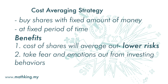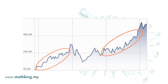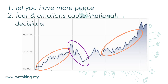If you invest one lump sum at a point, you will be so excited when the share prices go up, but you will be depressed when the share prices go down. Adopting this cost averaging strategy will take these emotions out and let you have more peace. Furthermore, fear and emotions are likely to cause us to make irrational decisions when we buy and sell shares.